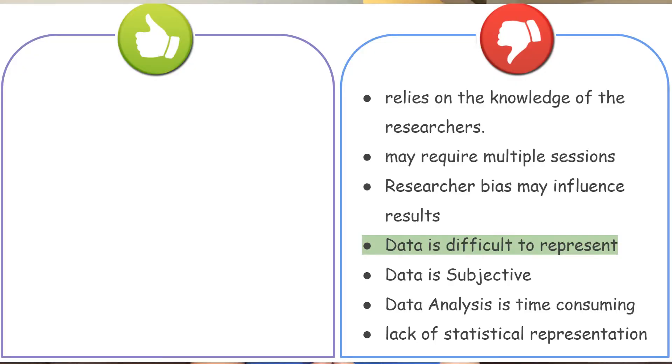Qualitative research is also difficult to replicate, which brings limitations in the scope of information derived. Additionally, qualitative research is not statistically represented — because it is a perception-based approach, the results cannot be statistically verified, making it difficult for the researcher to justify the subjective nature of the results.